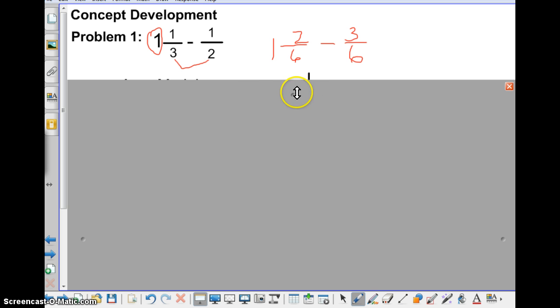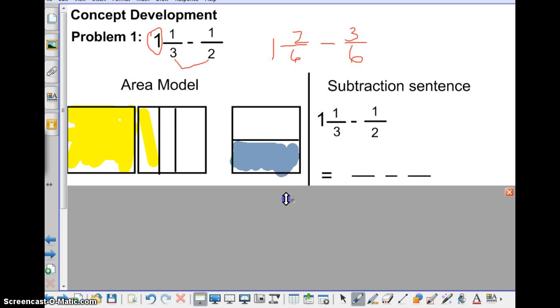So now we go to our area models, and I have them all colored in already just to save some time. So here I'm showing you the, without the common denominator, I'm showing you what we actually start with here. So it's 1 and 1/3 and 1/2. Okay, I know you guys understand that.